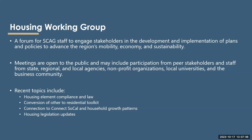Another part of our housing program at SCAG is called the Housing Working Group. It's really a forum for SCAG staff to engage stakeholders in development and implementation of plans and policies that advance the region's mobility, economy, and sustainability. It's not a decision-making body per se, but their input is used to help draft policies and programs. Areas of focus include safe and active streets, equity, natural and farmland conservation, and sustainable and resilient communities. The meetings are open to the public and may include participation from stakeholders and staff from state, regional, and local agencies, as well as nonprofit organizations, local universities, and the business community.